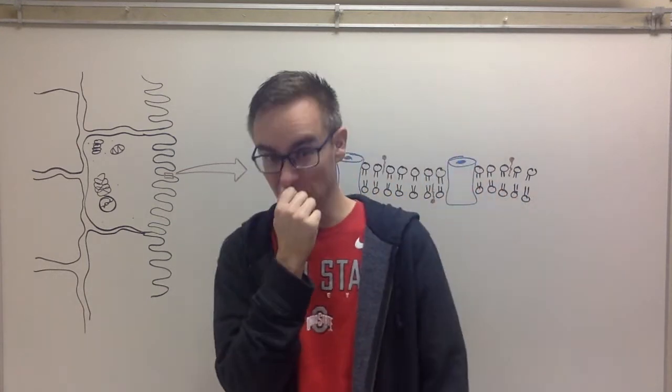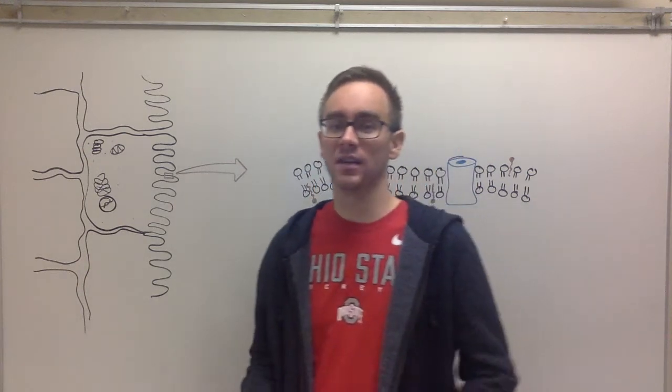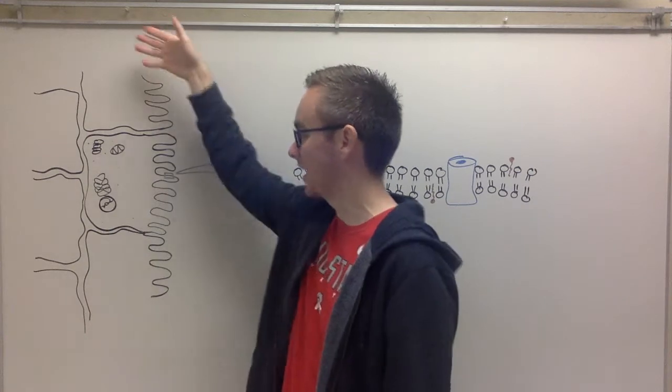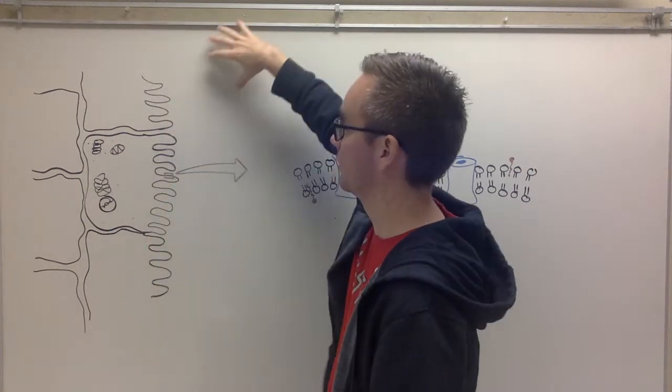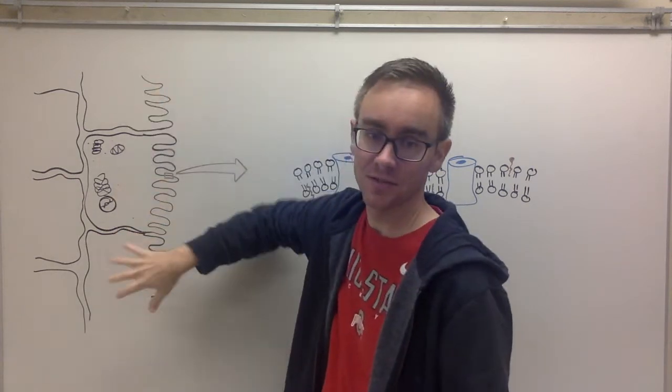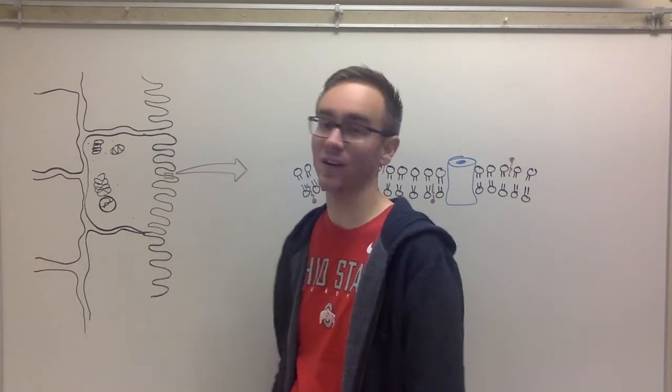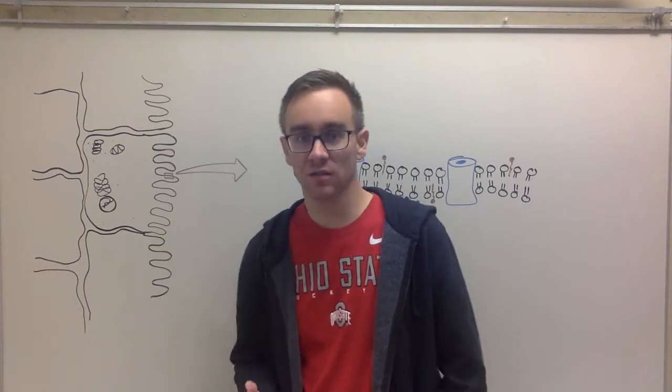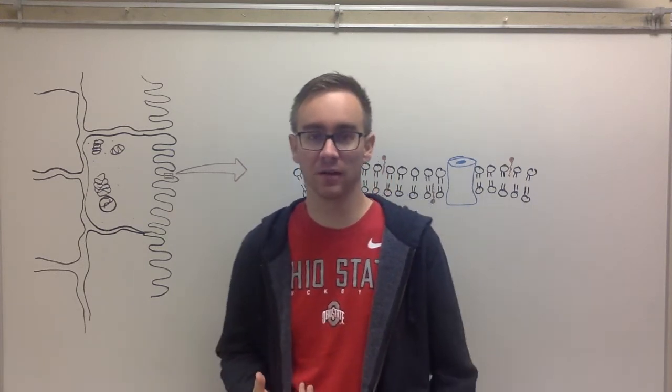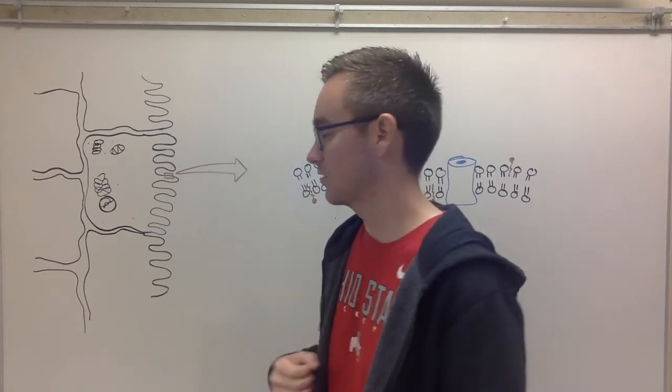So let's use an example here. Let's start with some cells here. I drew some intestinal cells here. So let's say we have our digestive tract. We have some intestinal cells. These intestinal cells have a very funny shape, and it's because the main function of intestinal cells is to absorb as many nutrients from the stomach lining as possible, or the intestinal tract.